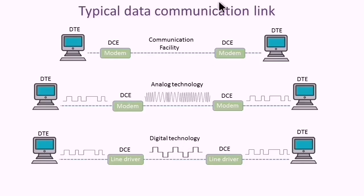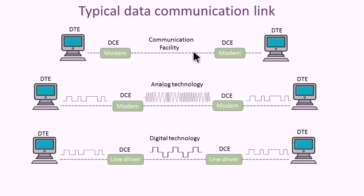A typical communication link can consist of the machine which is pulling the data, called data terminal equipment, and a modem which interfaces the data to the communication facility, called data communication equipment.